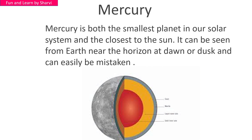Mercury is also the closest planet to the sun, and it can be seen from Earth near the horizon at dawn or dusk. It can easily be mistaken. So that's Mercury — let's move ahead.